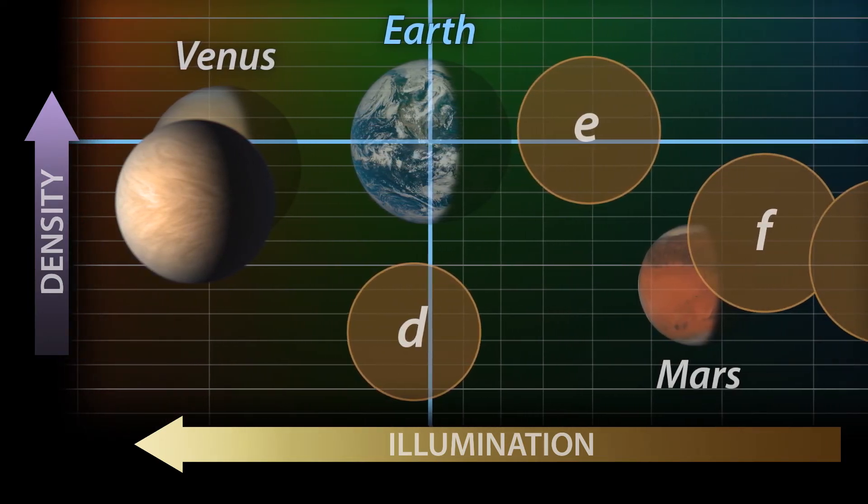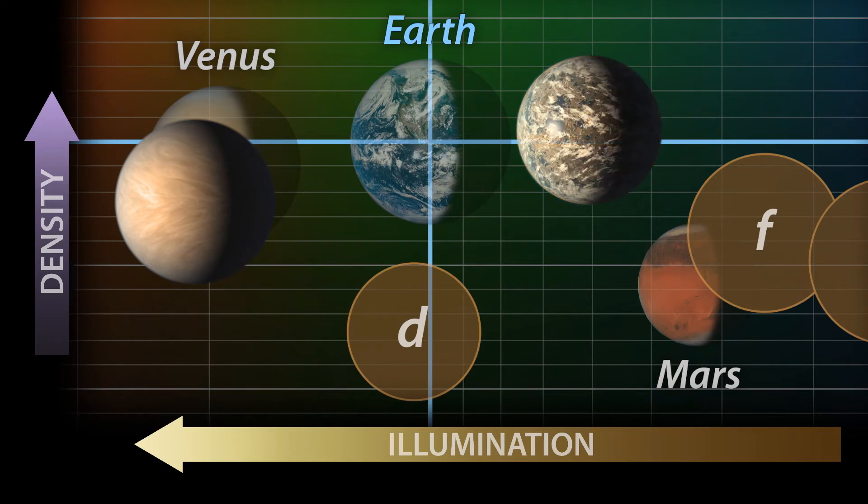TRAPPIST-1e is almost the same size and density as Earth. And while it receives a little less illumination, it still gets more than Mars. It's not hard to imagine that, depending on its exact composition, it too could have oceans on its surface.